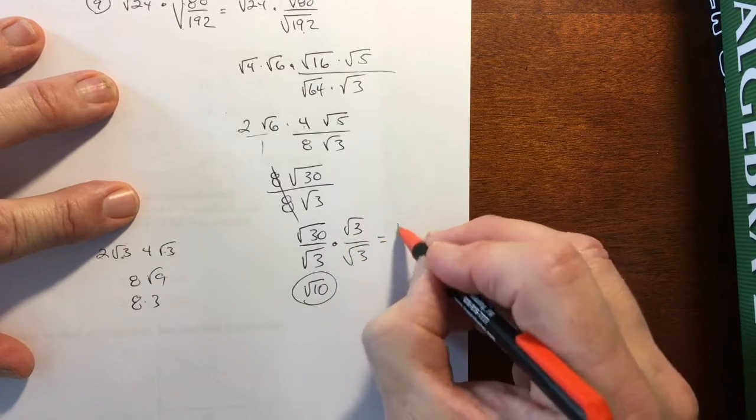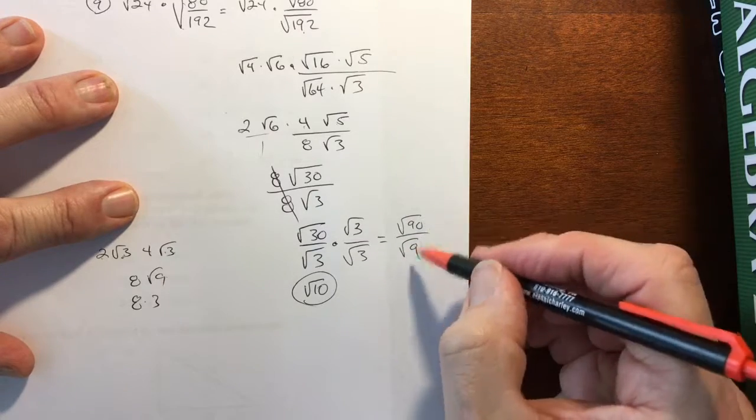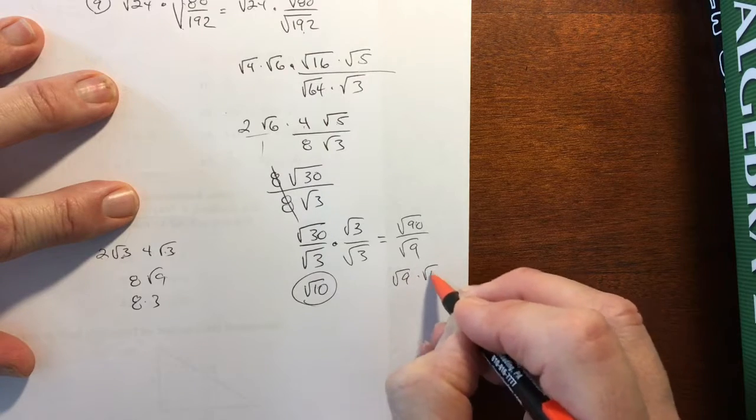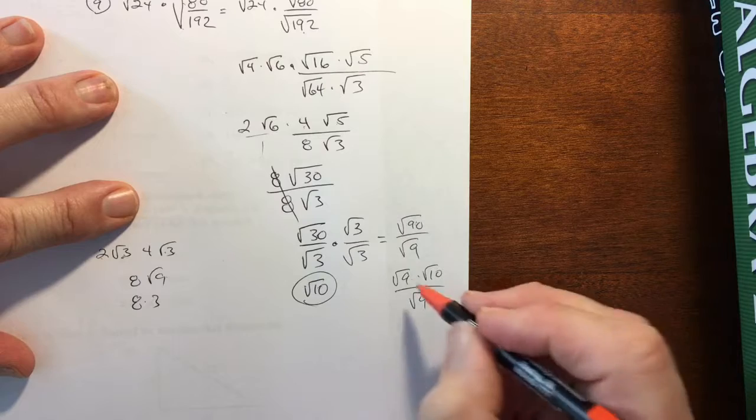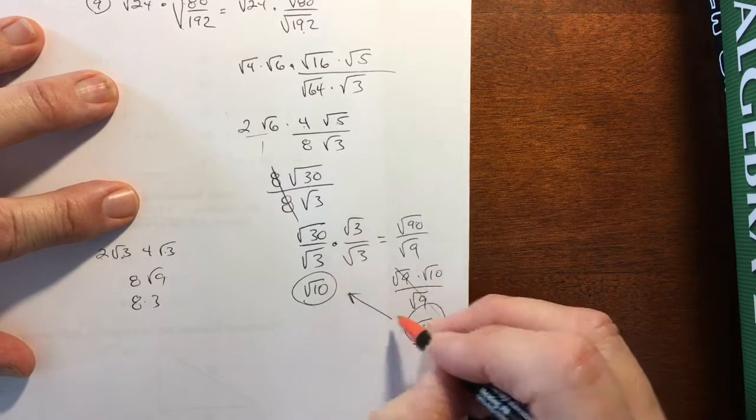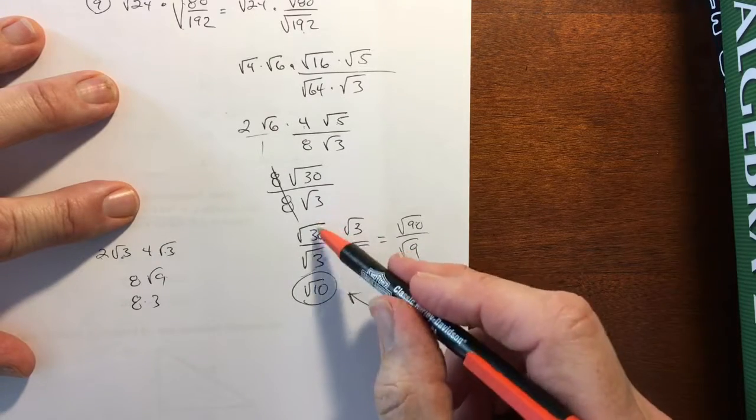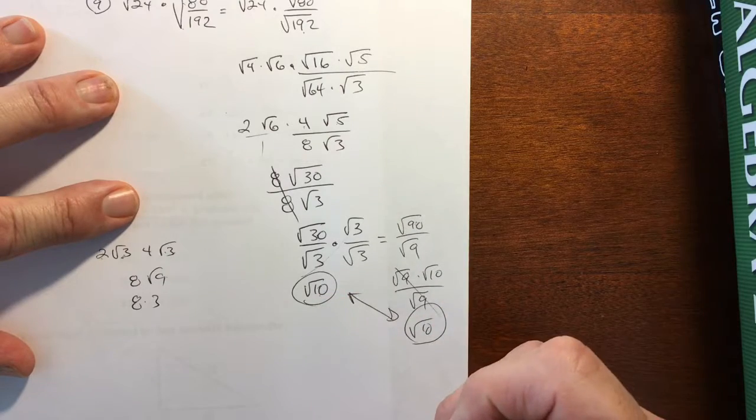Well, this will become square root of 9 times the square root of 10. And this becomes, well, it's just the square root of 9. They cancel out, and you still have square root of 10. So you get there either way. So we'll practice more of these later. We go directly from this to that. All right, good luck.